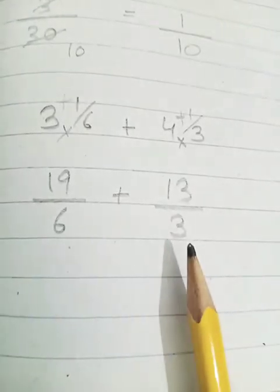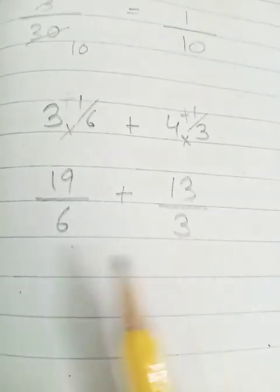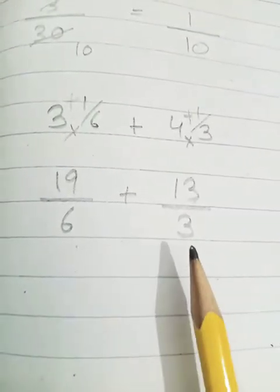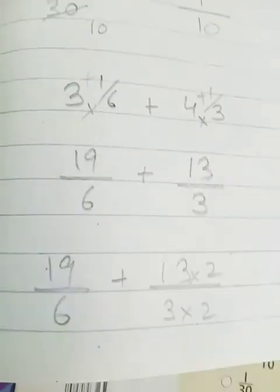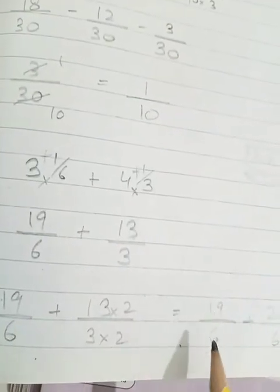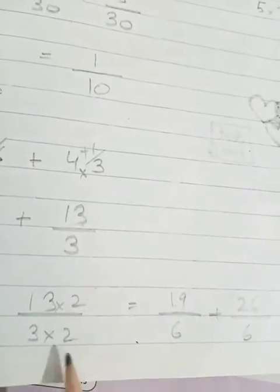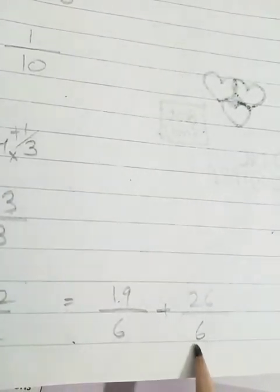Now we will add these terms by making the denominator same. So which is the greater number? 6 is the greater number. So we can make 3 as 6. Yes. We will multiply this term by 2. So it will become 19 upon 6 will come as it is. Plus 13 times 2 is 26, 3 times 2 is 6. So 19 upon 6 plus 26 upon 6. Denominators are same. Just add the numerators. It's 45 upon 6.